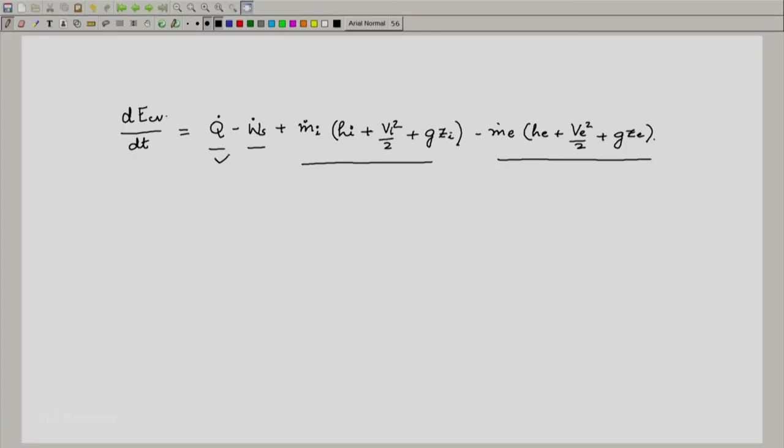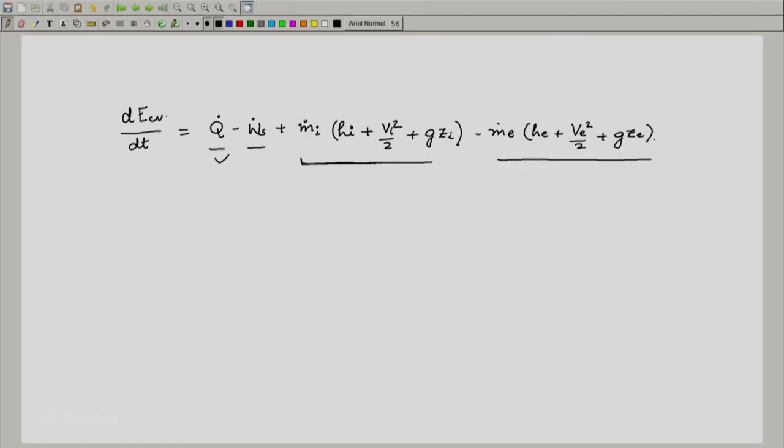One can also think of situations where the heat transfer is not important and we will discuss that. In which case the q dot term will go off. Sometimes you will realize that the work transfer is not important and hence the w dot s term will go off. Sometimes there is no inlet, sometimes there is no exit. Whenever there is no inlet, this entire term with m dot i disappears. Similarly, whenever there is no exit, this entire term with m dot e can disappear and only the remaining terms can be there.